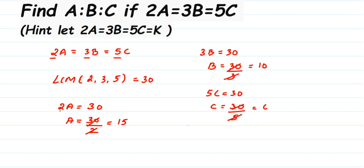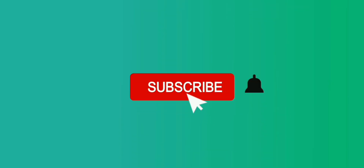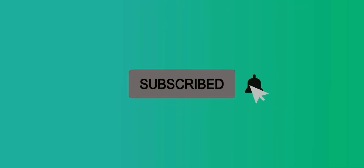So we got the values: A is 15, B is 10, and C is 6. Therefore A to B to C equals 15 to 10 to 6. This is an easier way compared to the previous method. Whatever method is easy for you, go for that. I hope this question is clear. If you have further questions or doubts, you can drop a comment. Thank you so much for watching.